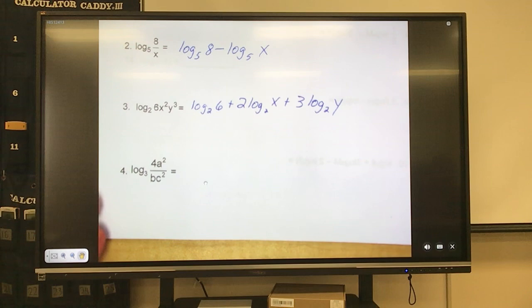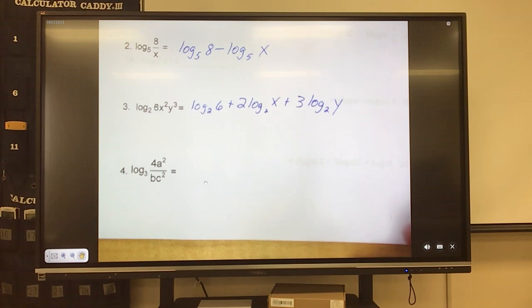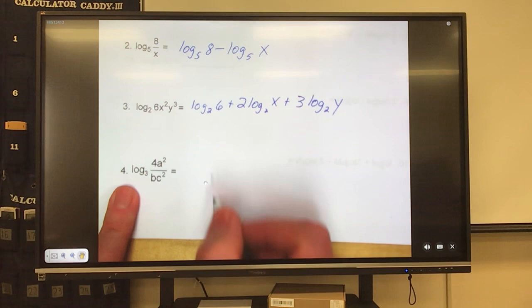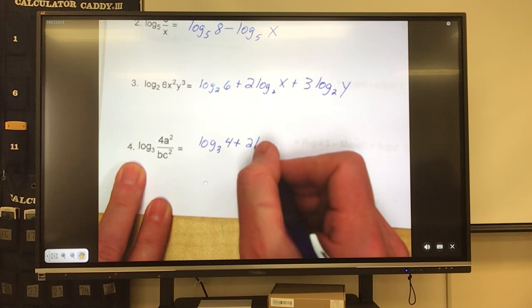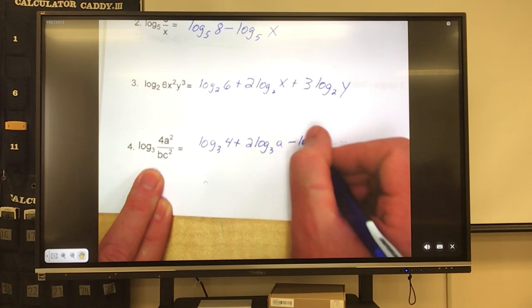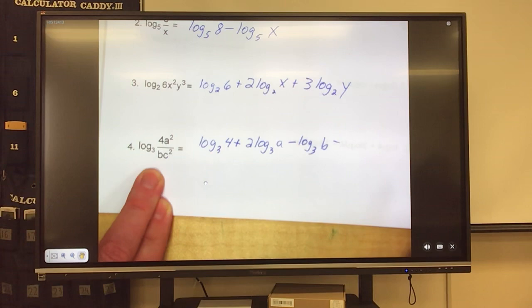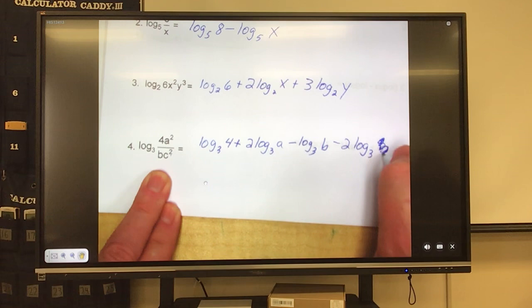This guy here does another little step. First thing you want to do the top first, then we're going to subtract the bottom. We do the top first, then we start subtracting out the bottom stuff. So we have, on top, it's multiplication, one of them has an exponent. So we have log base 3 of 4, plus, this one had an exponent, so that's 2 log base 3 of a. Now we're subtracting because it's being divided by these guys. Subtract log base 3 of b. Subtract again. This guy had an exponent, so it has to go to the front of the bus. 2 log base 3 of c.